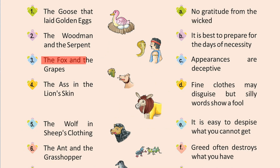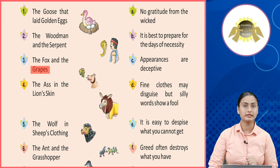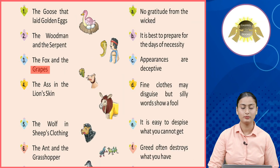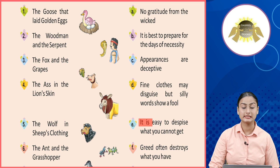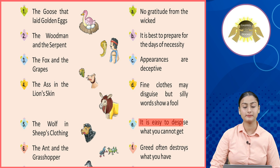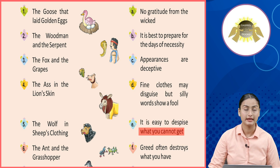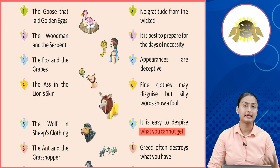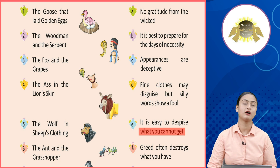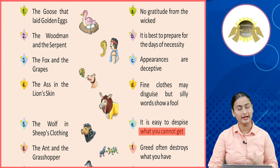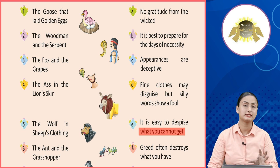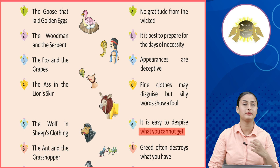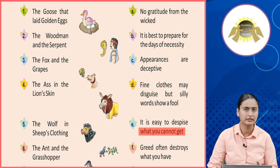Number three: The Fox and the Grapes. Is story se hume seekhne ko milta hai: It is easy to despise what you cannot get. Yani ki jo cheezein hume nahi mil paati hain, woh hume zyada attract karti hain, aur saath hi saath woh cheezein haasil karna hume lagta hai ki bohut hi easy hai.